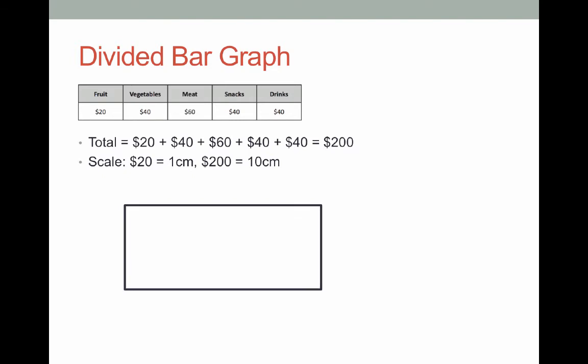Okay so here's our rectangle. We've got it set up. This is going to represent $200. Now let's start putting in the information. So fruit is represented by $20 which is 1 centimeter on our divided bar graph. So I measure 1 centimeter and I section off the section for fruit and I color it in whatever color I want and label it fruit.